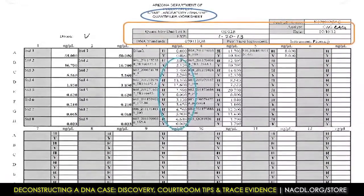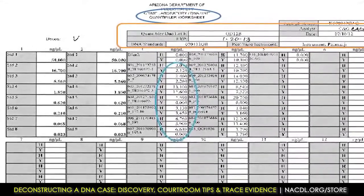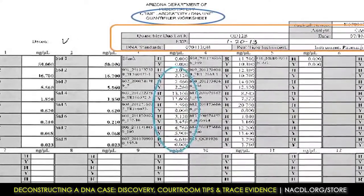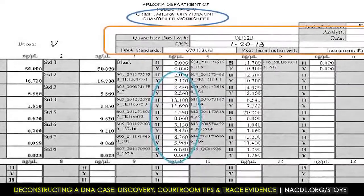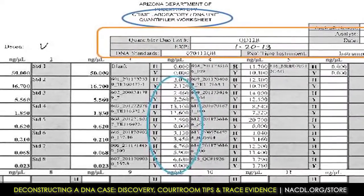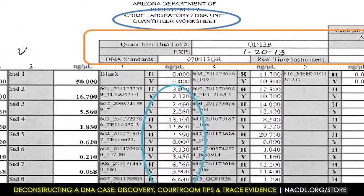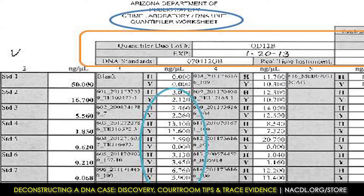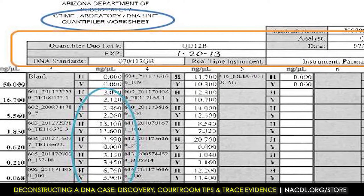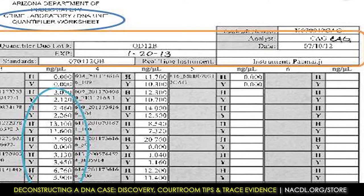This is the quantifier worksheet. One thing I did not mention when taking you through the DNA extraction with the bloody Converse is that I left out a step: to quantitate the sample to find out how much DNA we have to see if it's enough to even attempt obtaining a DNA profile. So what we do is we quantitate it. At this level, before even getting the genetic analyzer and amplifying, we can tell if there's male DNA in the sample. I look for the analyst or technician actually doing this work, the dates, the expiration, and our samples.